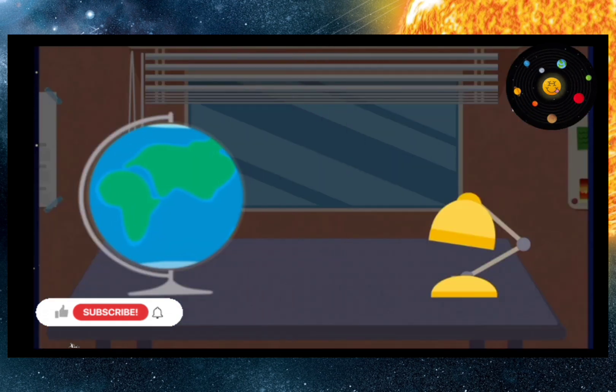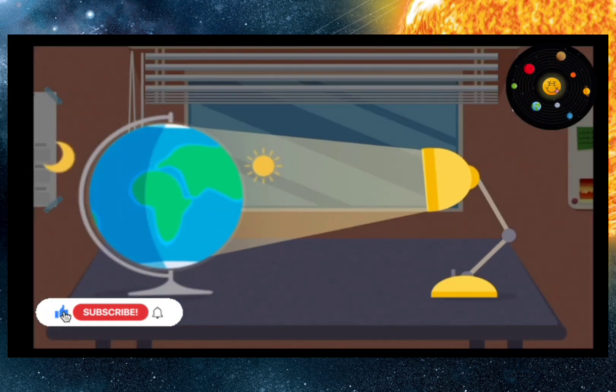The Earth rotates on its axis. That is why we see day change to night.